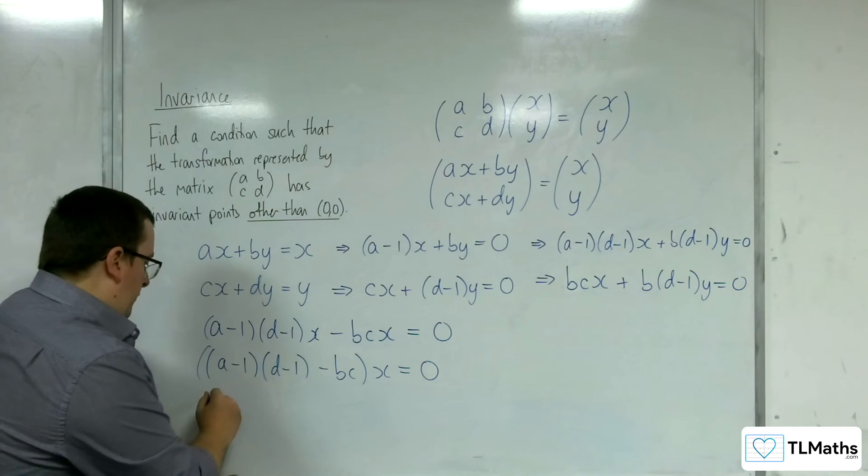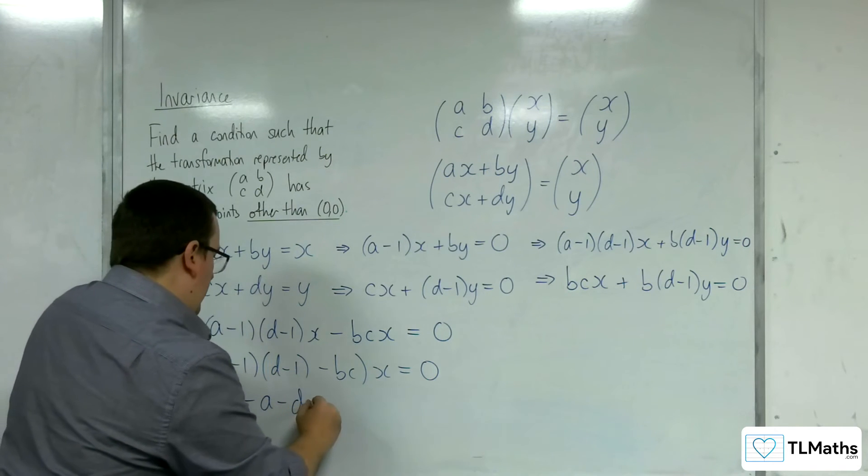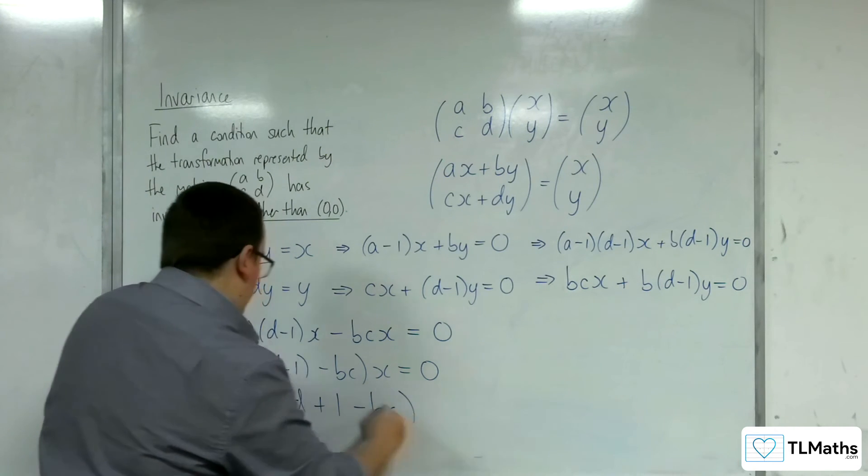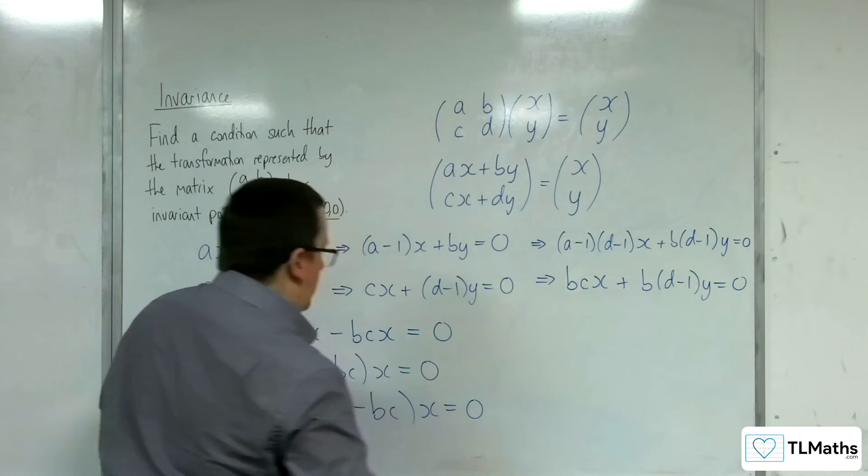Multiplying through, I would have ad - a - d + 1 - bc, x equals 0.